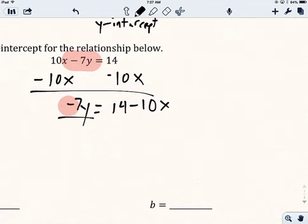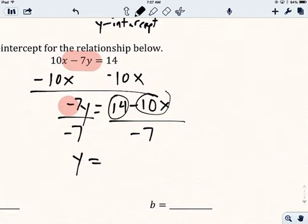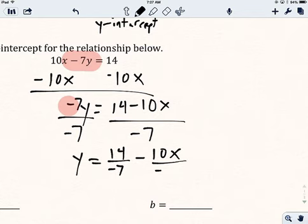I'll divide by negative 7 because negative 7 and y are currently multiplied. Division will undo that. I'll divide this side by negative 7. So I'll get y equals, and I'm going to take each of these numbers here and divide it by negative 7. So I'll get 14 over negative 7 minus 10x over negative 7.